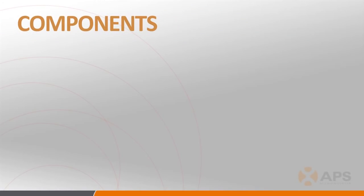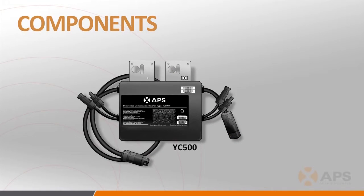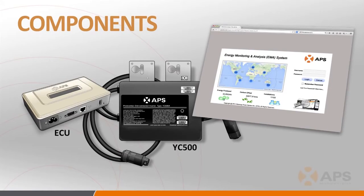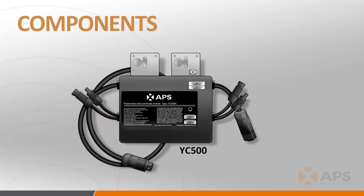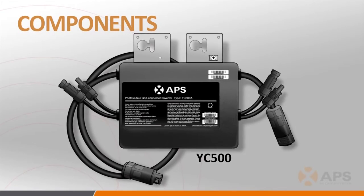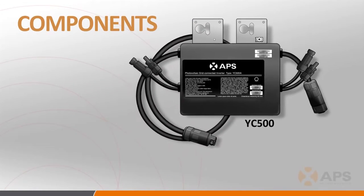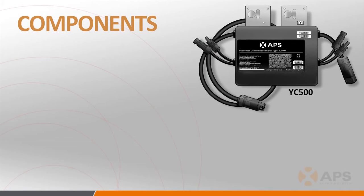There are three basic components that make up the APS system: the inverter, in this case the YC500; the Energy Communication Unit, or ECU; and the Energy Monitoring and Analysis website, or EMA. The inverter's role in the overall solar system is to convert the DC power generated by the solar panels into AC power, which can be utilized by the power grid. The YC500 is a grid-tied microinverter.